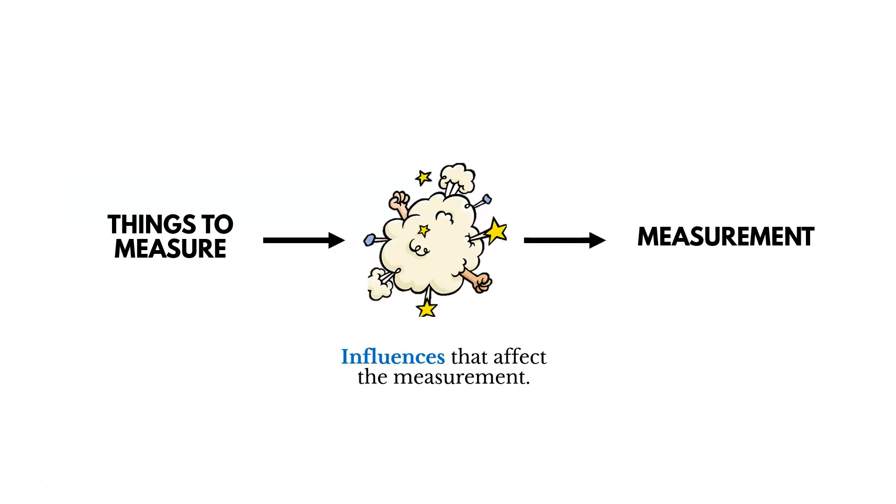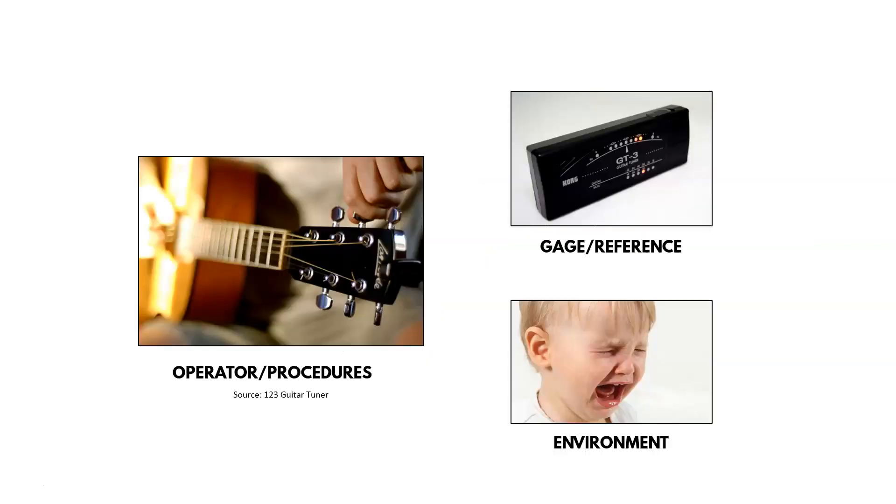Now, as we take measurements, as we measure things, there's influences that affect those measurements that we need to acknowledge. And so the measurement that we get, the reading that we get, is going to be affected by those influences. So here are some of those influences. And I'll use an example of tuning a guitar. That's a process, tuning a guitar.